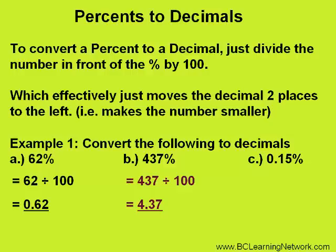Finally, we have 0.15%. We will take 0.15, divide it by 100, move the decimal two places to the left. We will need two zeros for placeholders here, giving us an answer of 0.0015.